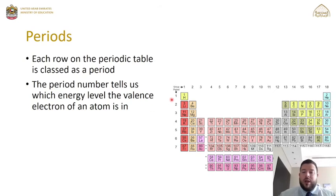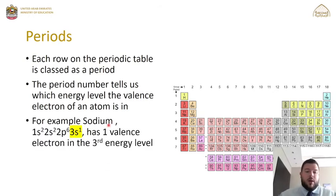The period number tells us which principal energy level the valence electrons are in. Period 1 means valence electrons are in energy level 1, period 2 means energy level 2, period 3 means energy level 3, and so on. Taking sodium as an example, the highest energy level is 3, so sodium is in period 3 because its valence electron is in the third principal energy level.